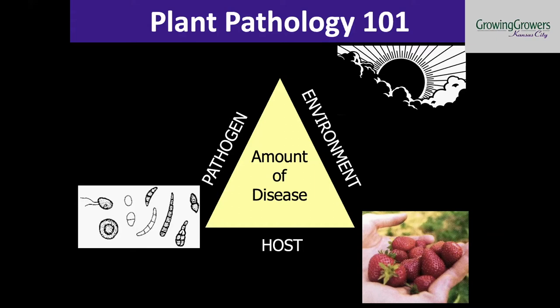In conventional cropping systems that use a lot of fungicides, they're working more or less against the pathogen — trying to use fungicides to kill the pathogen population. But if we're looking for more integrated or organic strategies, organic growers grow a lot in high tunnels because if you reduce the amount of rain or leaf wetness period on plants, you're going to have a lot less disease. There are lots of different ways to tweak that triangle in order to manage diseases.